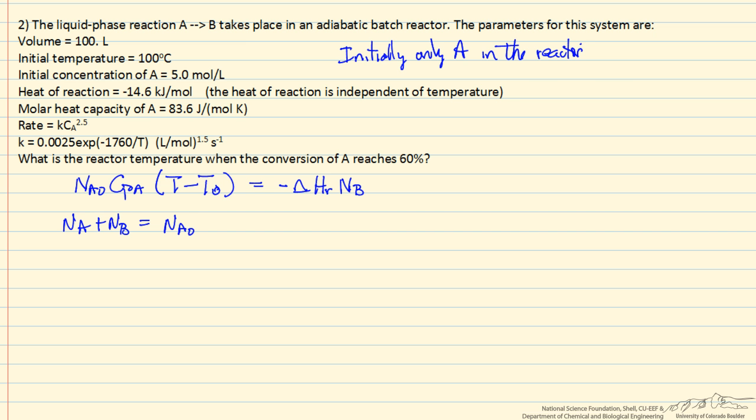Now I can rearrange this equation and write it in terms of concentrations. The number of moles initially is the reactor volume times the initial concentration, and the number of moles of B finally would be the concentration of B times the volume. The concentration of B is going to be, if we have in this system that 60% reacts, then the concentration of B is 60% of the initial concentration of A.